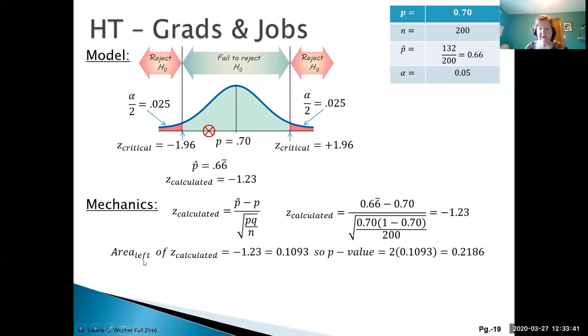The area to the left of Z calculated - remember Z calculated is negative 1.23 - equals 0.1093. So we take that value, and that's the area from here all the way down. We're going to multiply that by two, and we get a P-value of 0.2186.